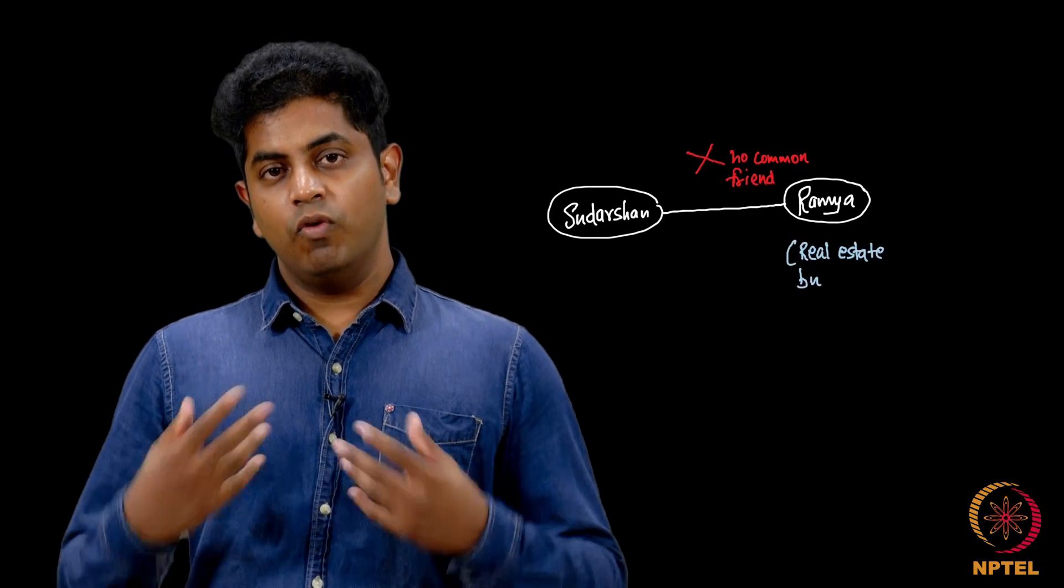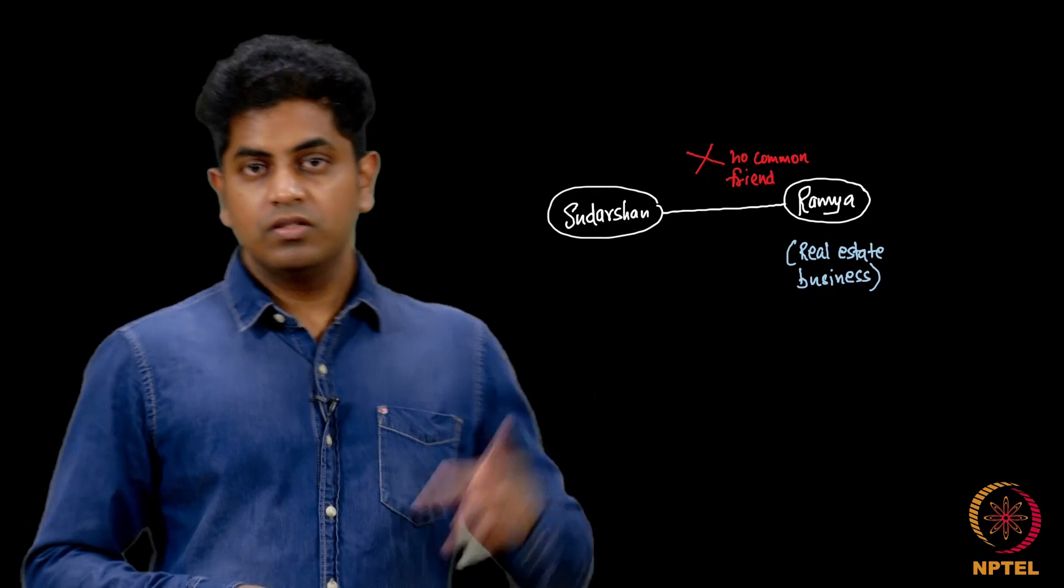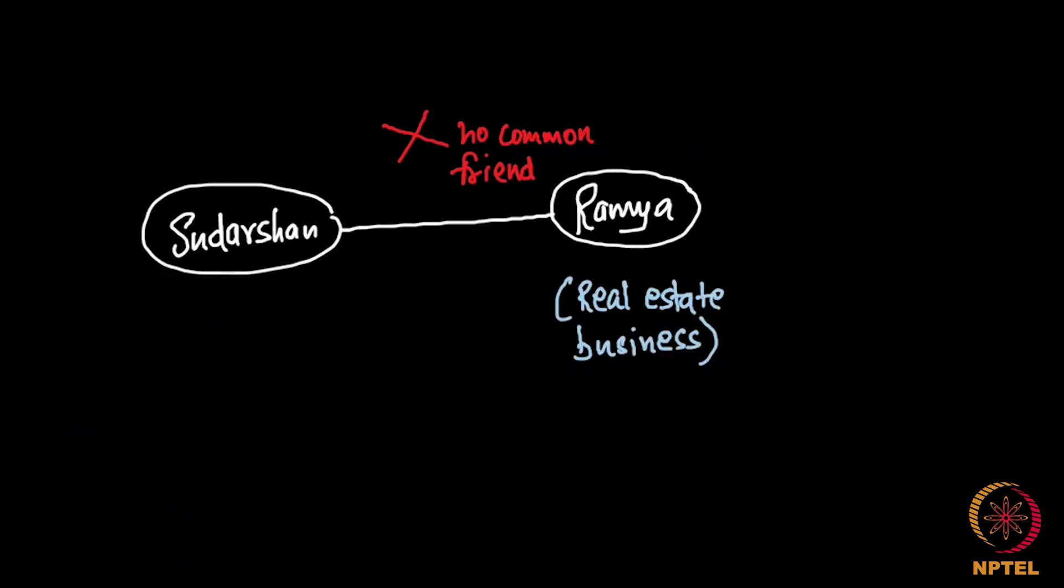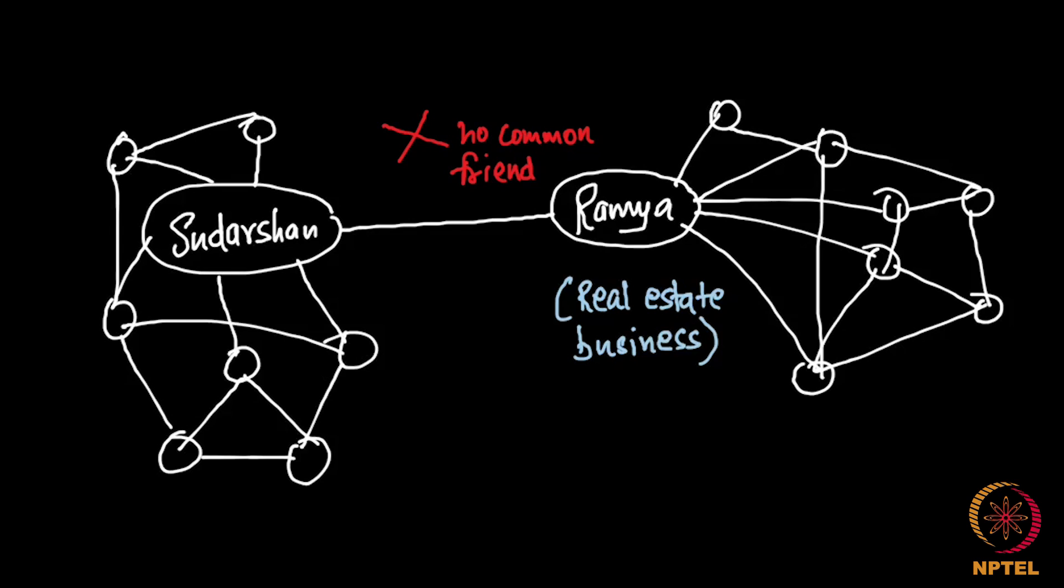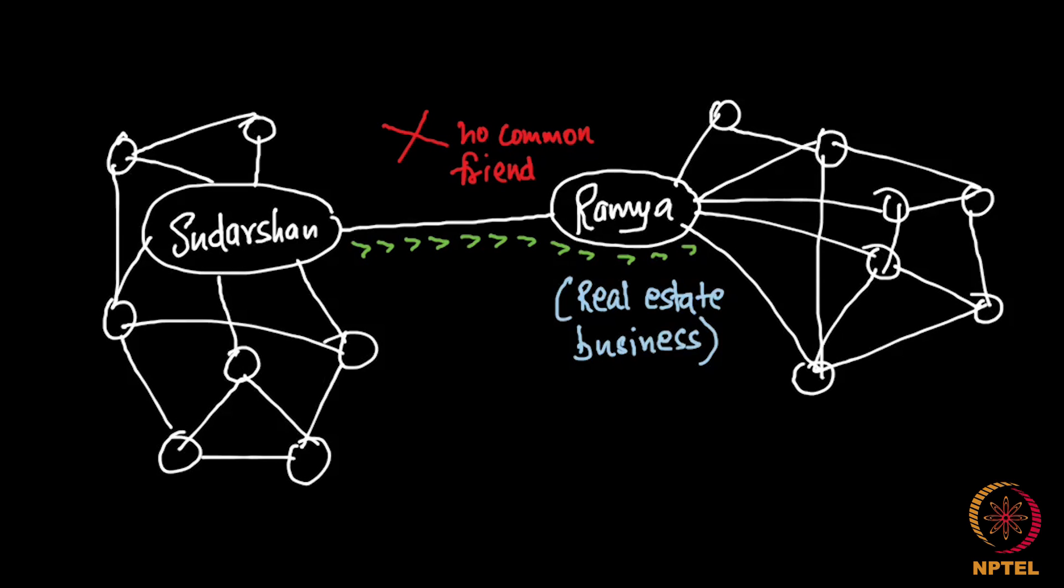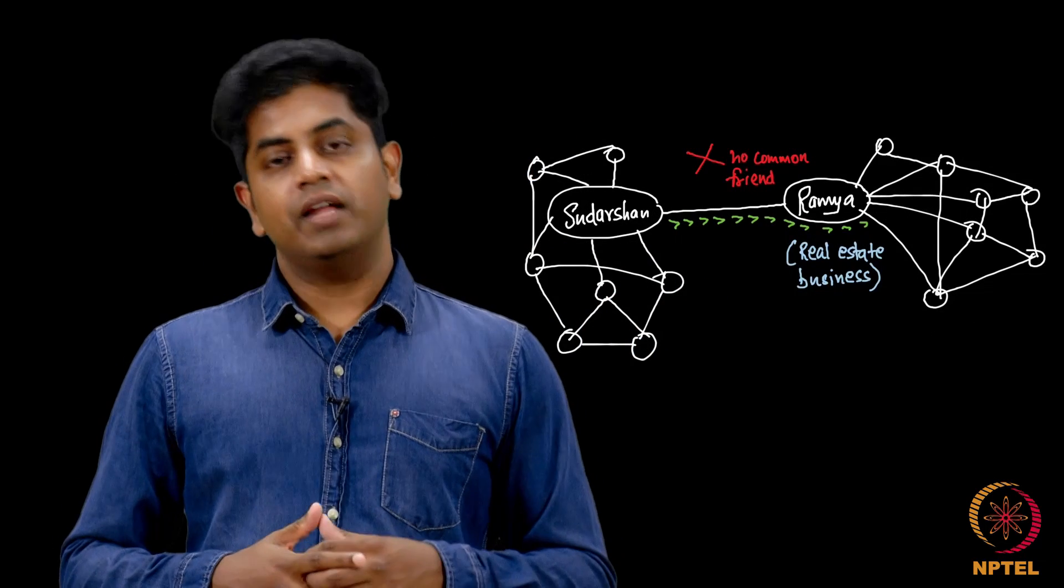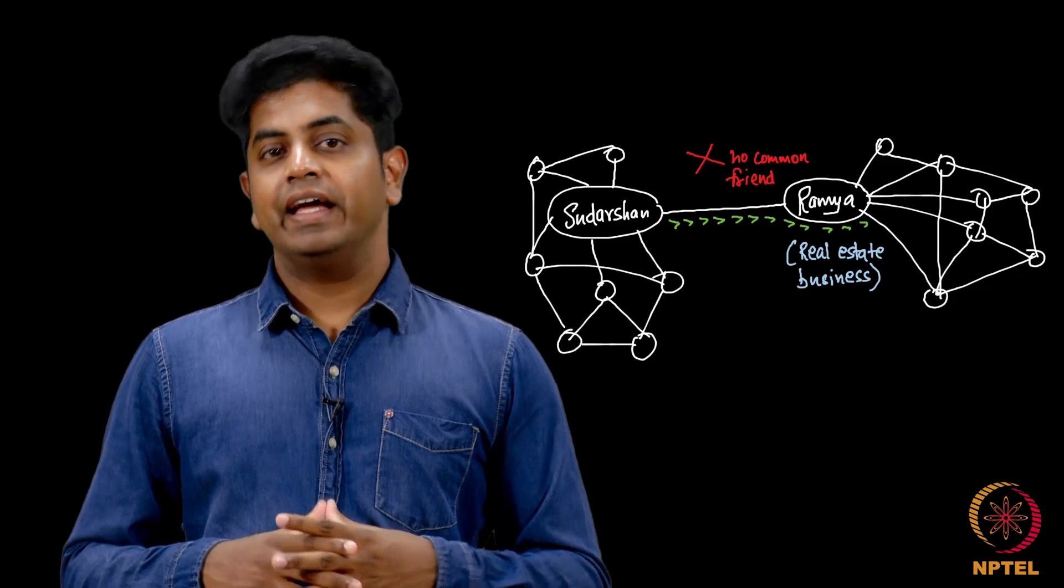Imagine Ramya is into real estate business. Look at this graph. Sudarshan, that is me, and Ramya are friends and look at the graph here. Sudarshan's community is very different, Ramya's community is very different. In fact, for Sudarshan to reach out to anyone on that side in that community he must go through Ramya. And imagine Ramya is a real estate agent.